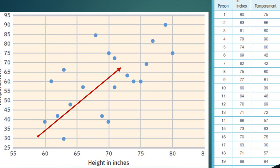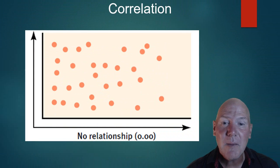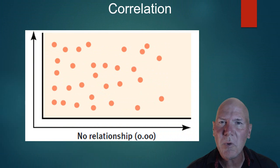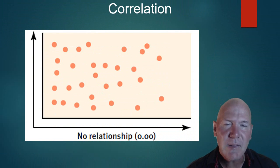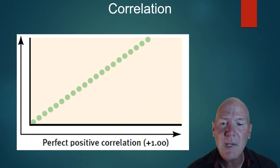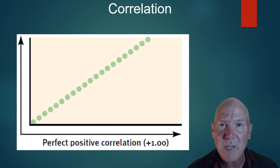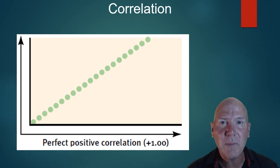The positive correlation shows because the direction of the graph is moving from the bottom left to the top right. If there was no relationship at all, your scatter plot would be spread out all over the place — and the correlation coefficient to represent this would be zero, meaning no correlation whatsoever. If it was a perfect positive correlation — every time A goes up, B goes up — the coefficient would be positive one, and it forms a straight line going from the bottom left to the top right.